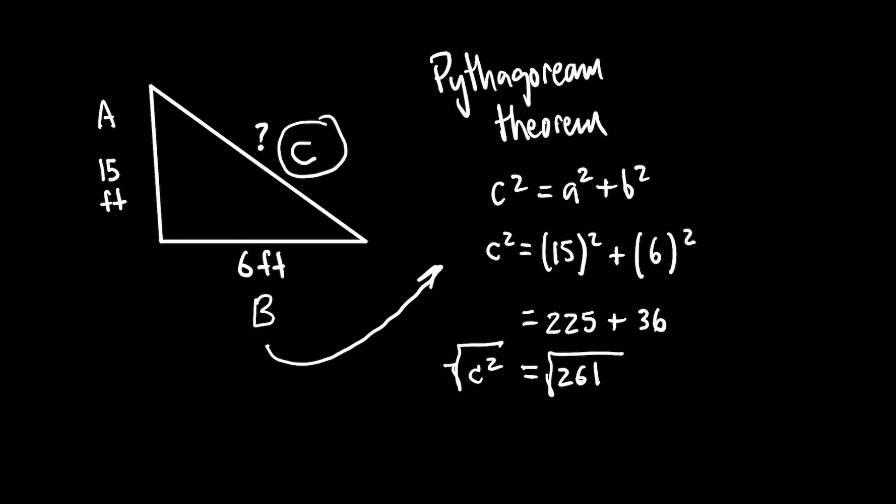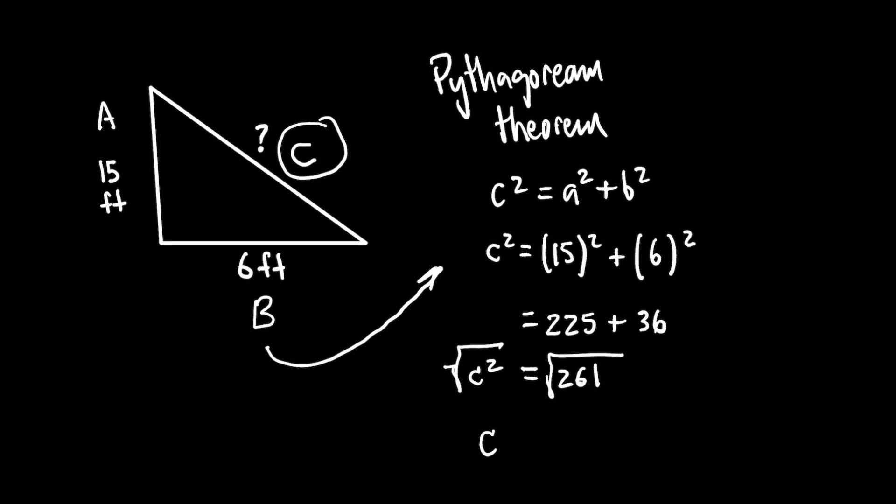Remember that what you do on one side, you have to do on the other side. So you would take the square root of 261 as well, and that would give you that c is equal to 16.5. And that's all there is to this sort of problem.